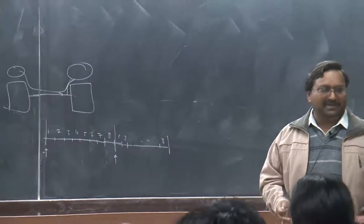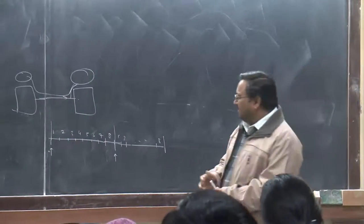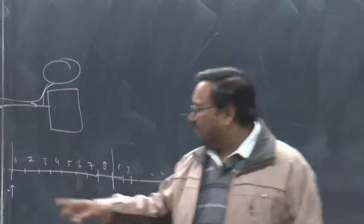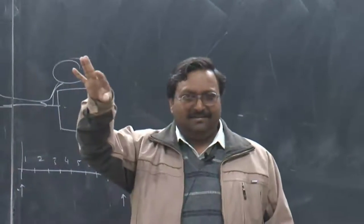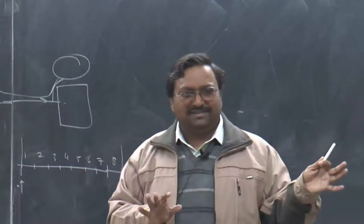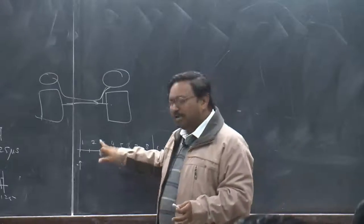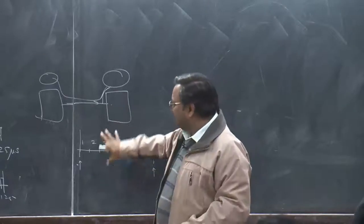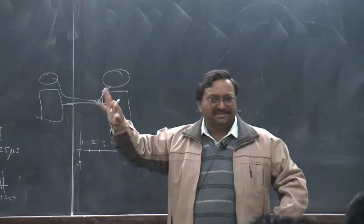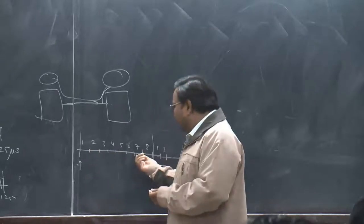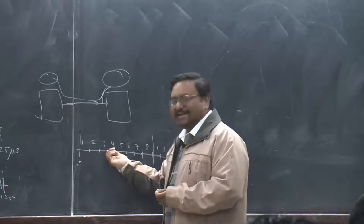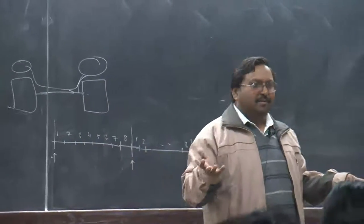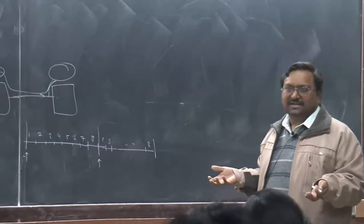How does the switching happen? The location of a slot inside the frame identifies both the source and destination. If this box can swap slot positions — read one octet and put it in another position — then switching is achieved. That is exactly what the time switch does.